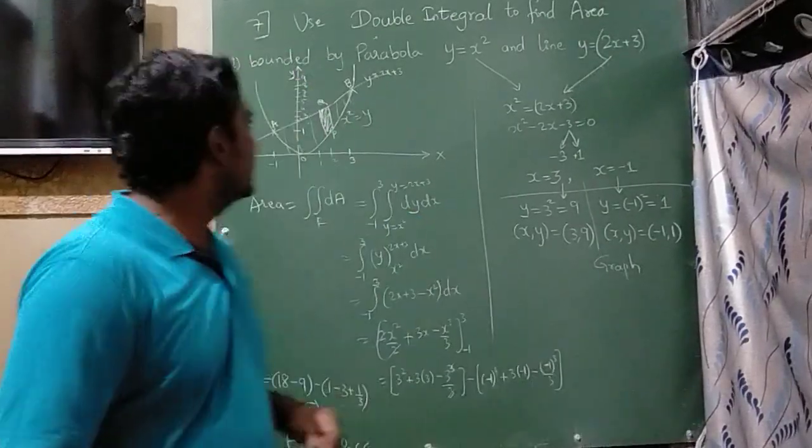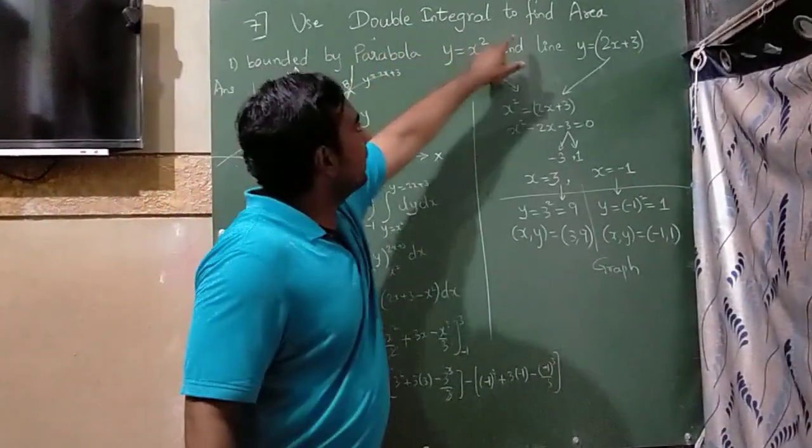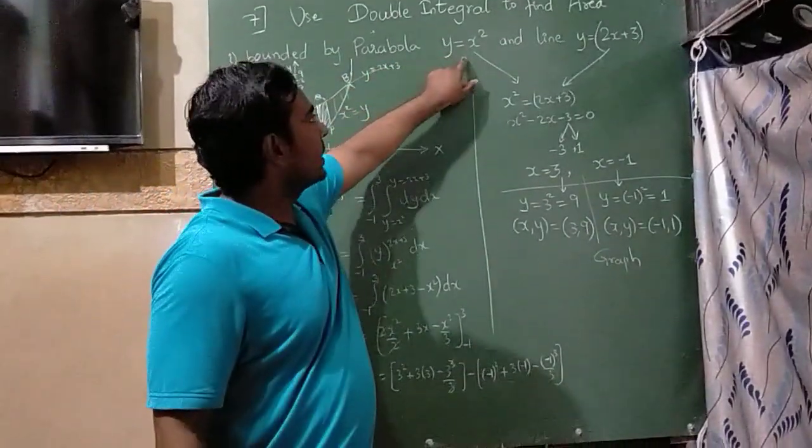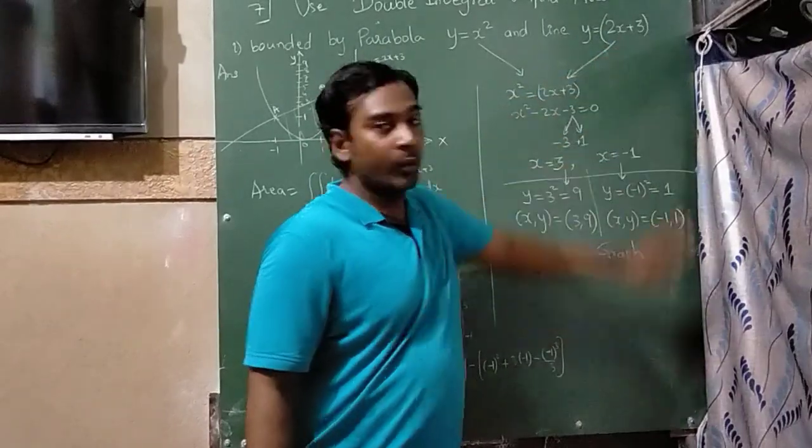Hello students, the next question is use double integral to find an area bounded by parabola y equals x square and a line y equals 2x.